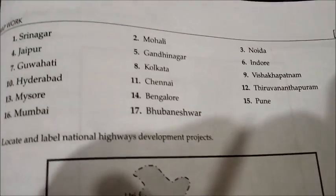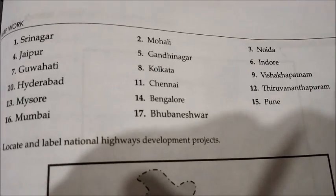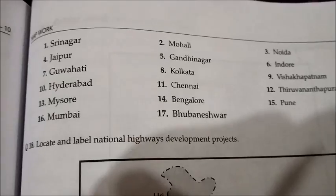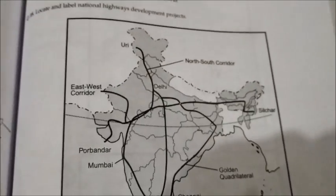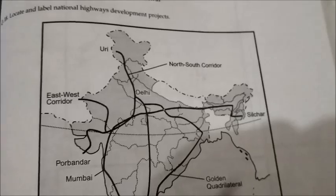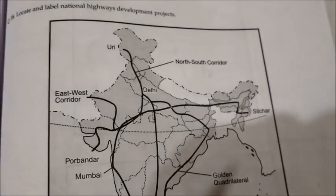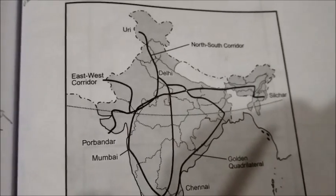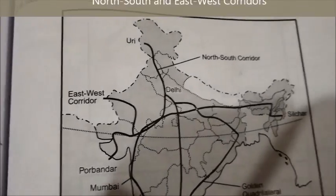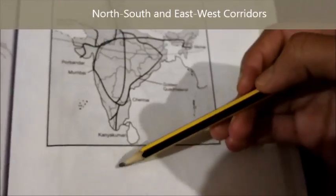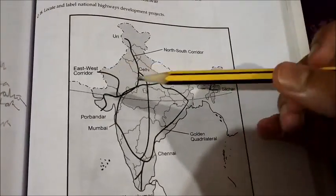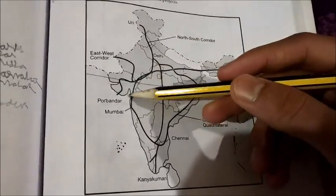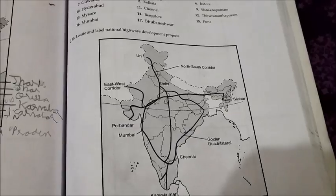There are 15 software technology parks — I'm sure you've heard of all of them. Now for the more important one: the national highway development projects. The north-south corridor links Srinagar in the north to Kanyakumari in the south. The east-west corridor goes from Silchar in Assam to Porbandar in Gujarat. Both are part of the Golden Quadrilateral.